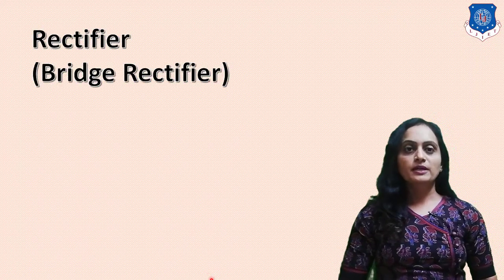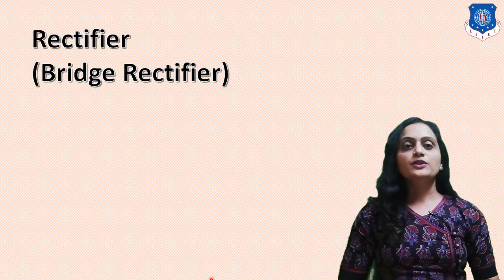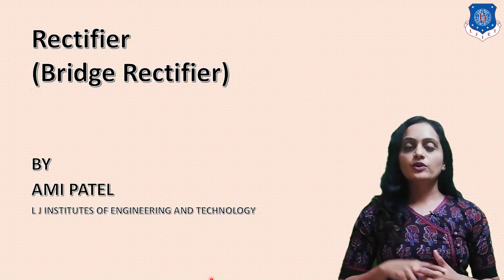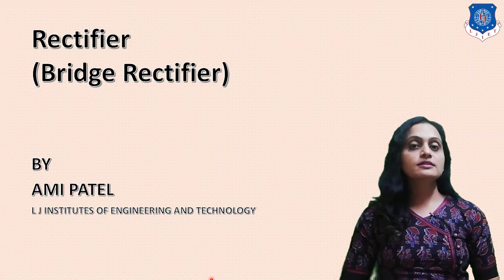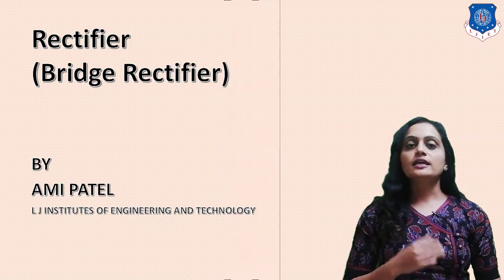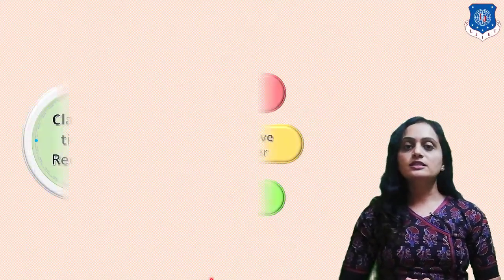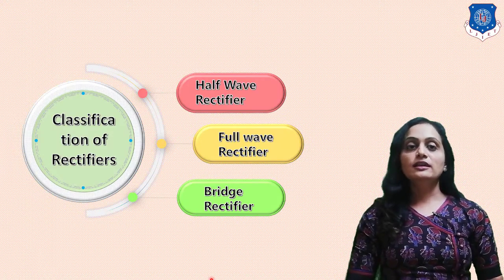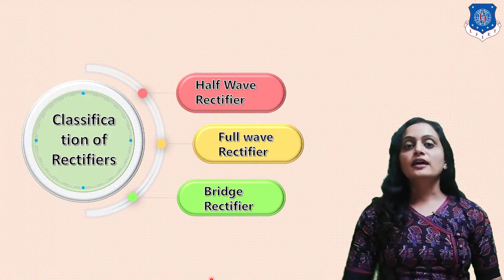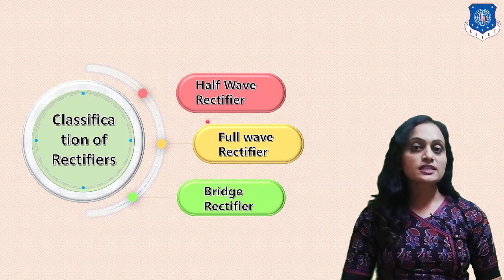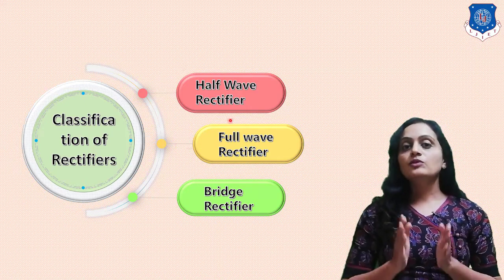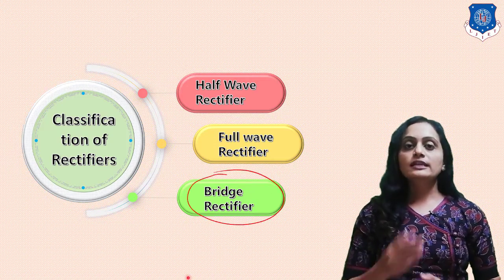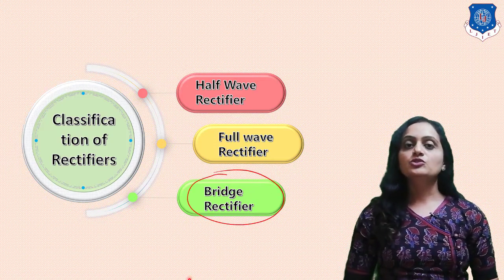Hello everyone, this is Ami Patil. This video is about bridge rectifier. In the previous video, I had discussed about the rectifier — it's an electronic circuit which converts the alternating signal into the direct signal. We had also seen the half wave rectifier, then the full wave rectifier with the center tap transformer, and this video is basically concentrating on the bridge rectifier. So let us see the circuit diagram for the bridge rectifier.